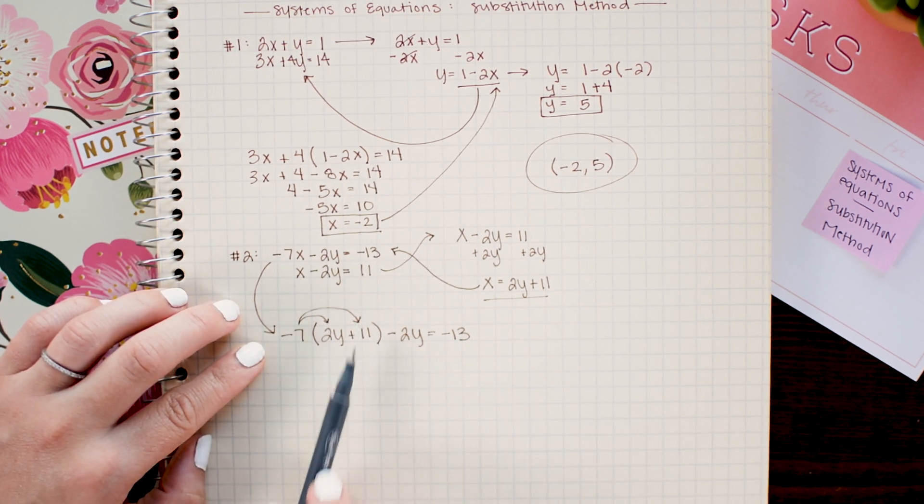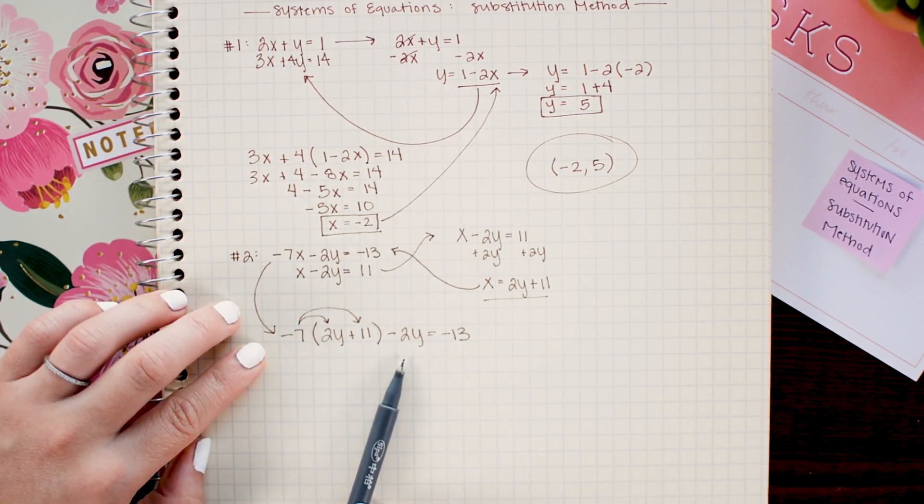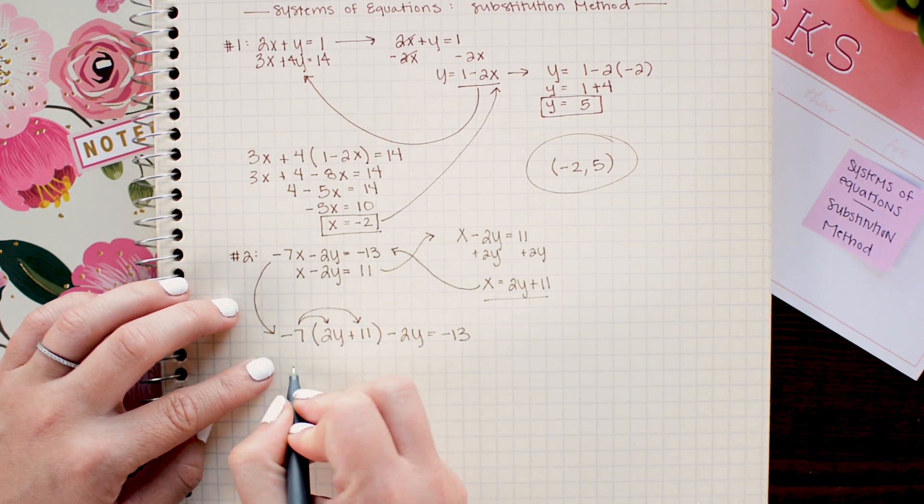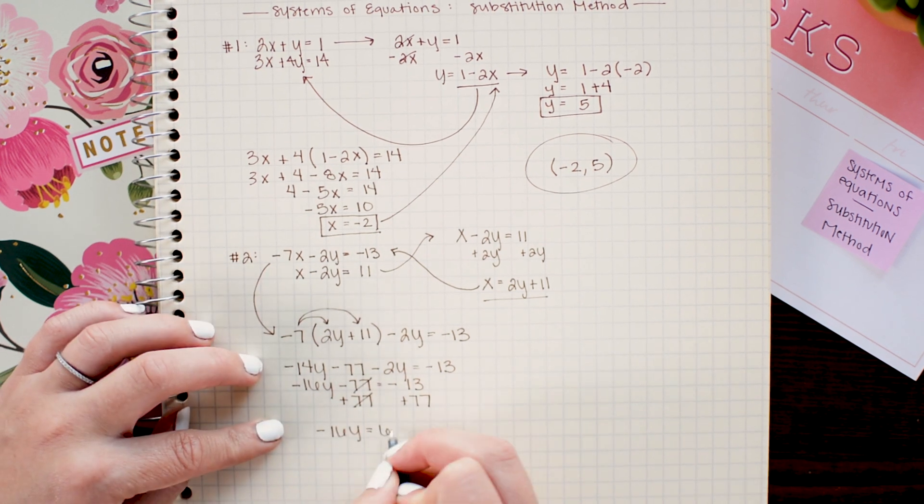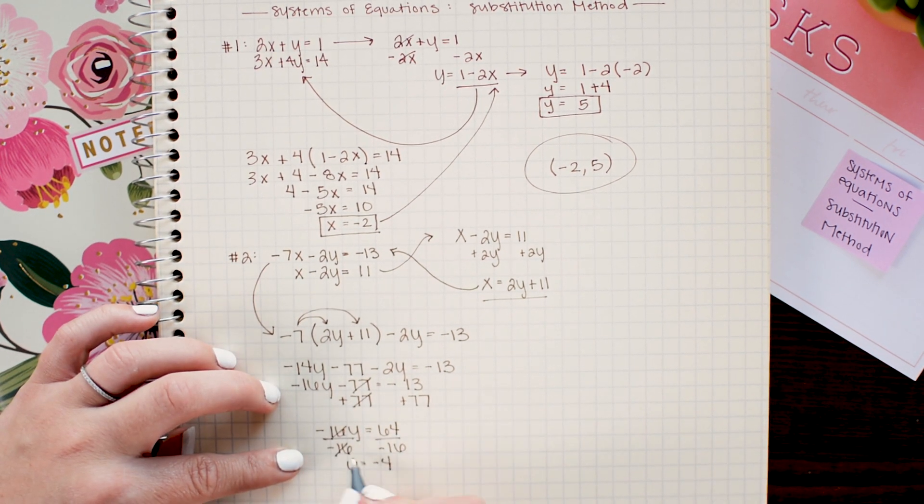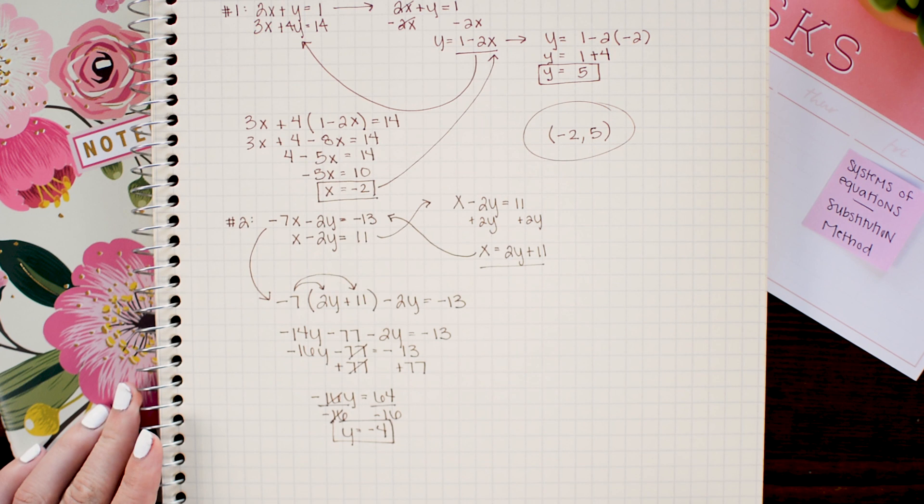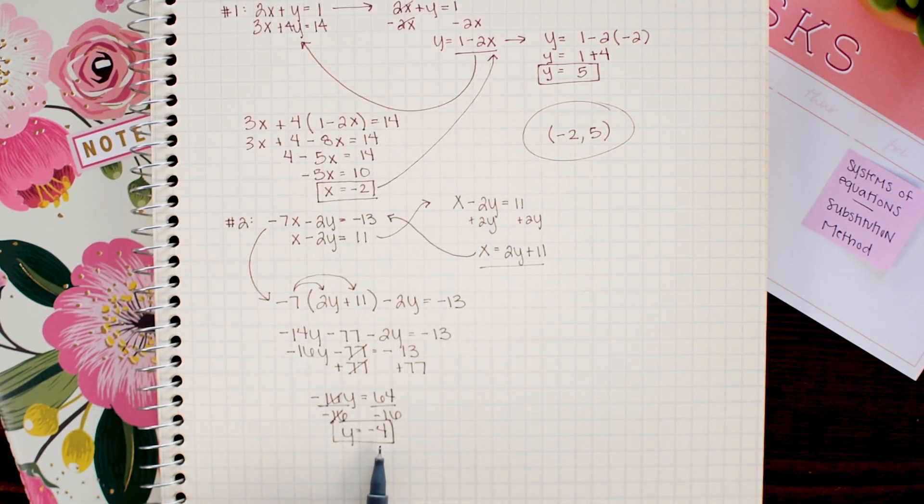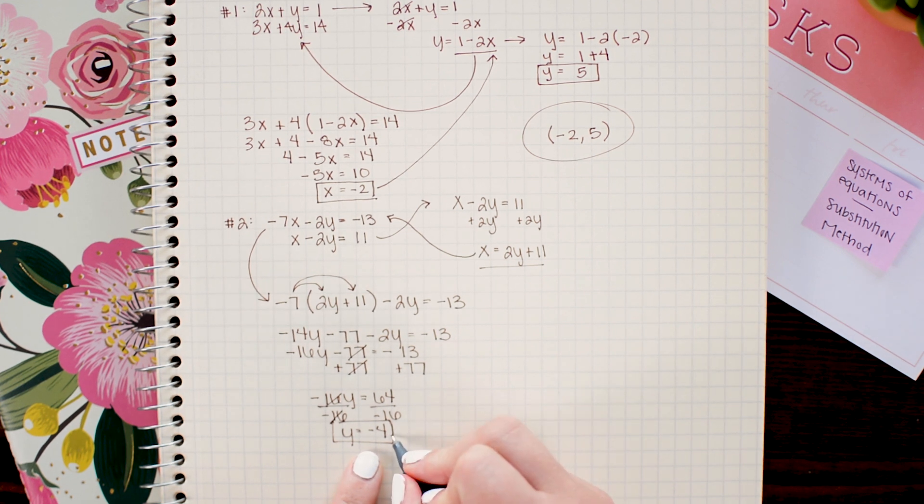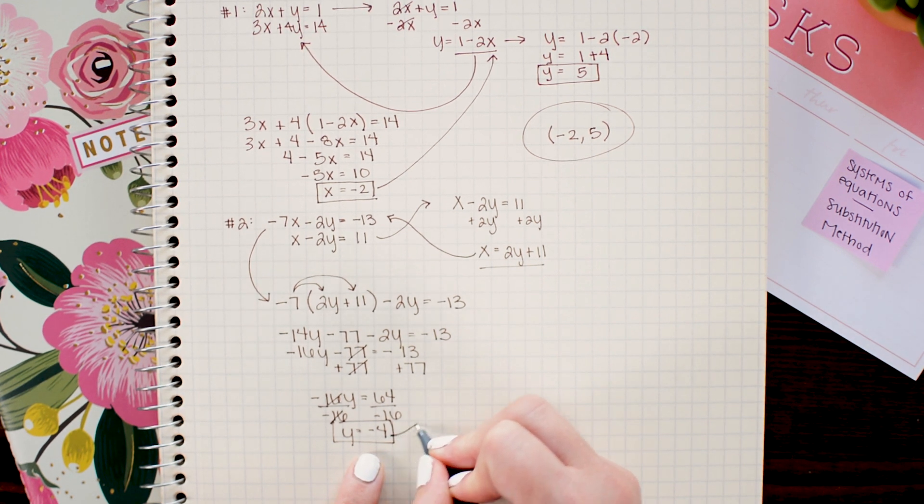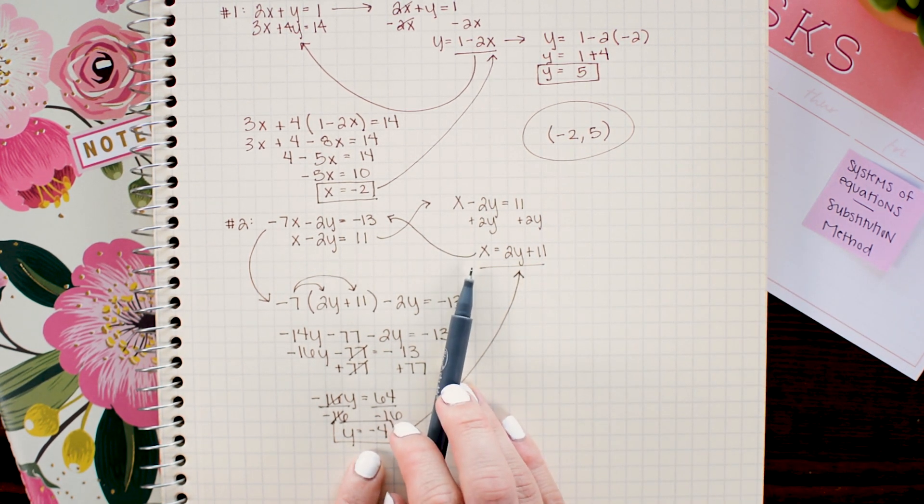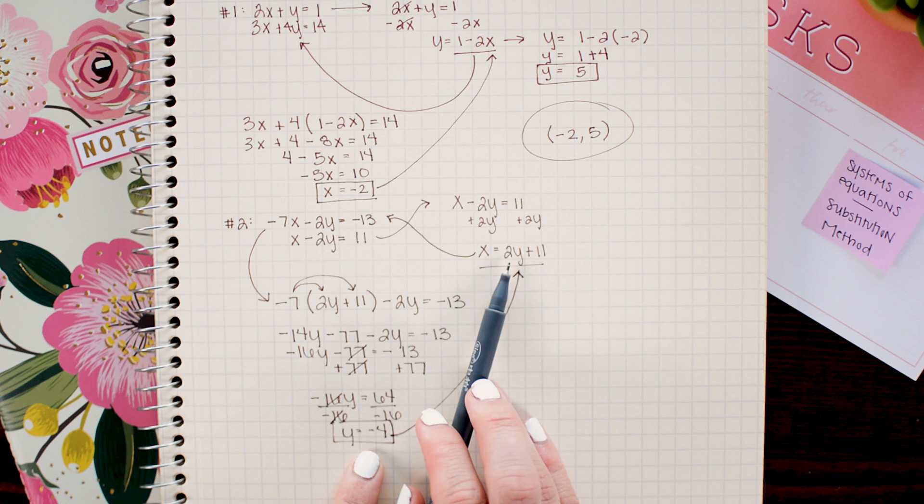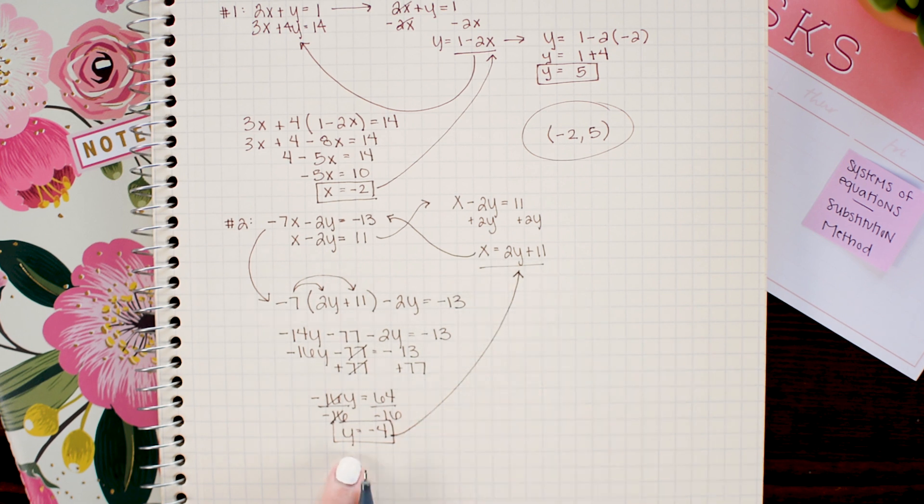Next I am going to distribute the negative 7 through, combine like terms and solve for y. So here I get y equals negative 4 and once again my last step is to take that negative 4 and plug it back in for y. The easiest place to plug it in is the relationship we have here where x is isolated. So I'm going to replace y in the 2y plus 11 with negative 4.